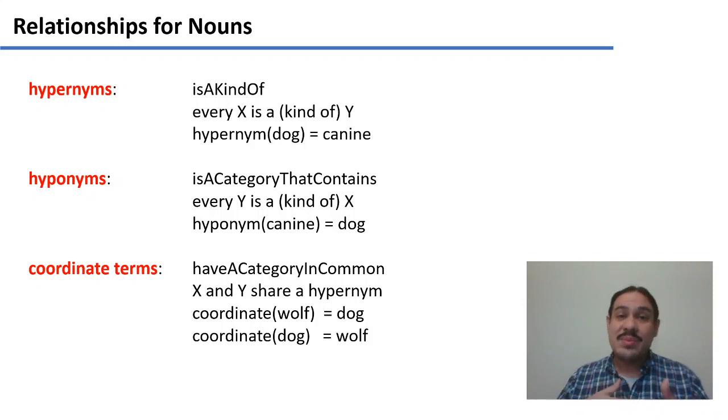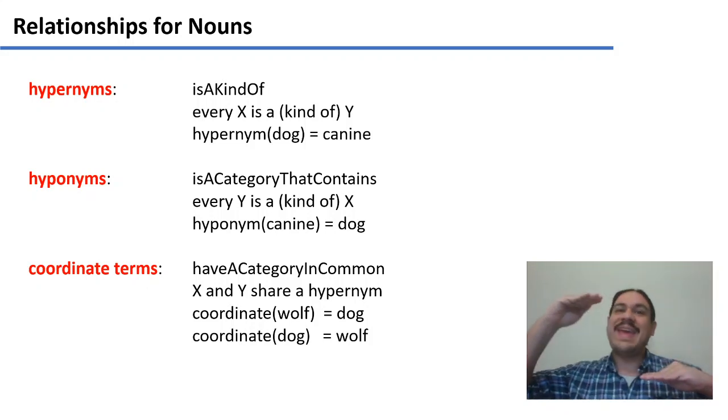So, we have hypernyms and hyponyms. Dog, a hypernym for dog is a canine, because a dog is a kind of canine. This is also true of wolf. A wolf is a kind of canine.